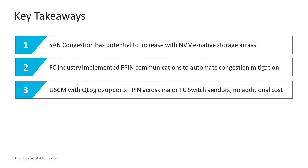Here are the key takeaways: SAN congestion issues are likely to increase with the deployment of NVMe native storage arrays. Fabric performance impact notification, or FPIN messaging, has been implemented by the fiber channel industry to allow SAN infrastructure components to communicate about congestion issues and take action to mitigate it. QLogic HPAs fully support all FPIN notifications across both fiber channel switch vendors at no additional cost, saving your clients money and time.